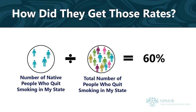To get the native rate, they divided the number of native people in my state who quit smoking from 2006 through 2010 by the total number of people in my state who quit smoking from 2006 through 2010. When they did this, they got 60%.